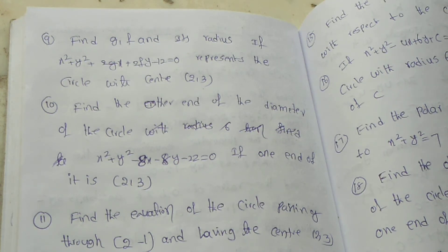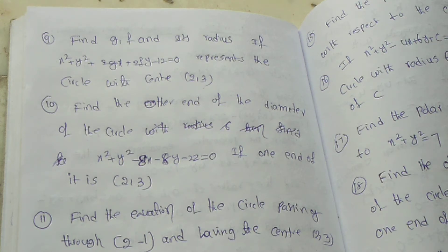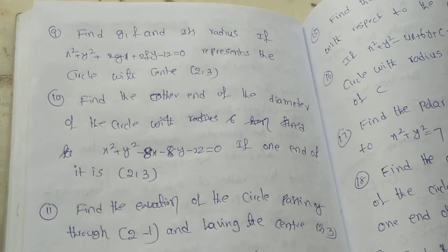Tenth question: Find the other end of the diameter of the circle x square plus y square minus 8x minus 8y minus 22 equal to 0, if one end of it is (2, 3).